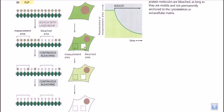Importantly, the data is collected from an area that was not bleached. The fact that bleaching one part of the cell affects another part shows that the whole cell membrane is interconnected. A phospholipid molecule present in one location today may have been elsewhere yesterday — nothing is fixed in place.